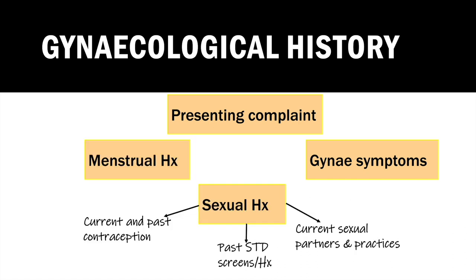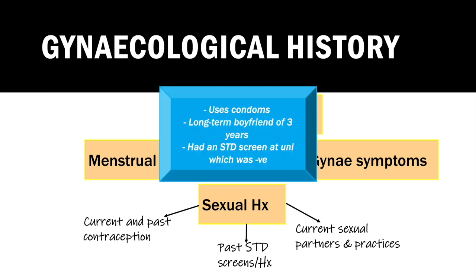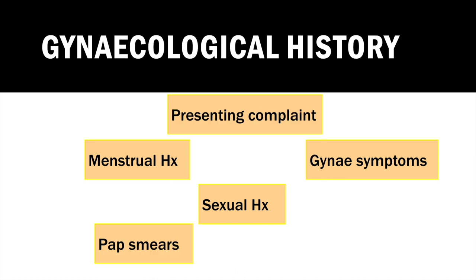You warn Amy that you're going to ask some standard questions about her sexual health, which you ask everybody. You ask what form of contraception she uses, whether she's used anything differently in the past, and whether she's had any compliance problems. You ask about any STD screens, any diagnoses, and treatment received. Amy and her partner of three years use condoms. She had an STD screen at university which was negative for chlamydia and gonorrhoea. As Amy is under 25, she won't yet be called for cervical smears.